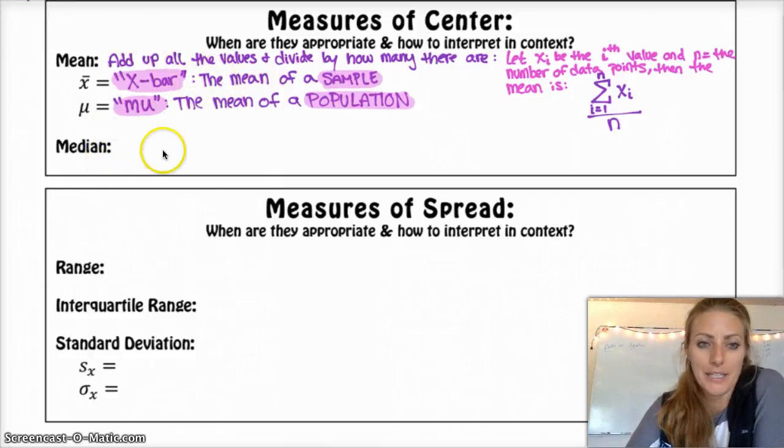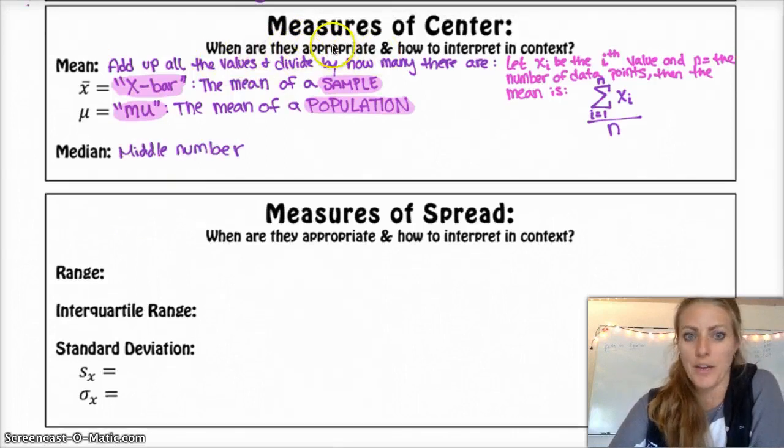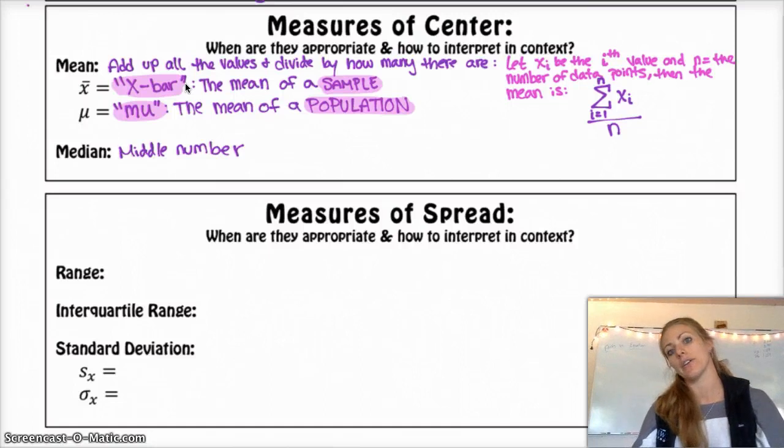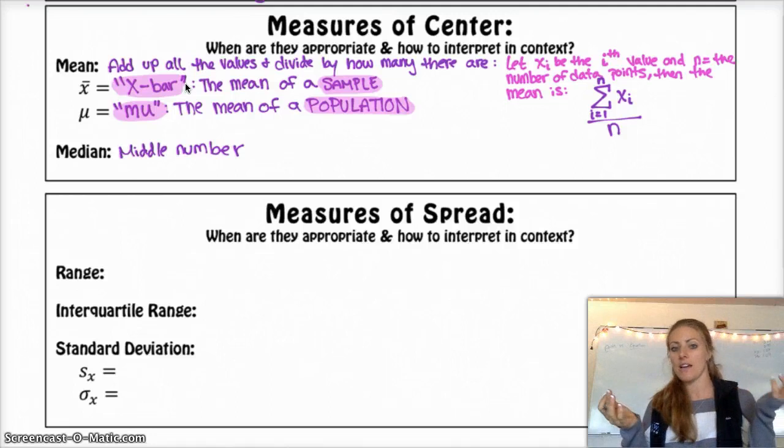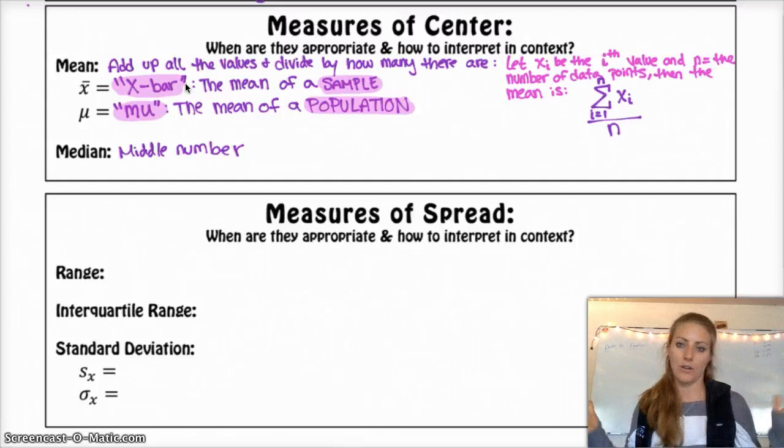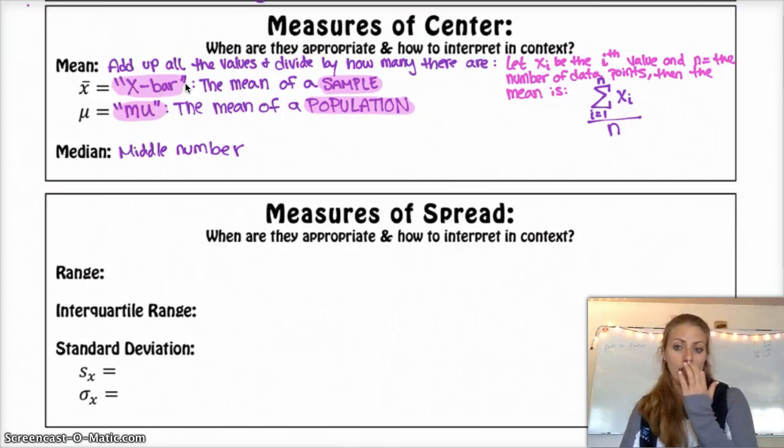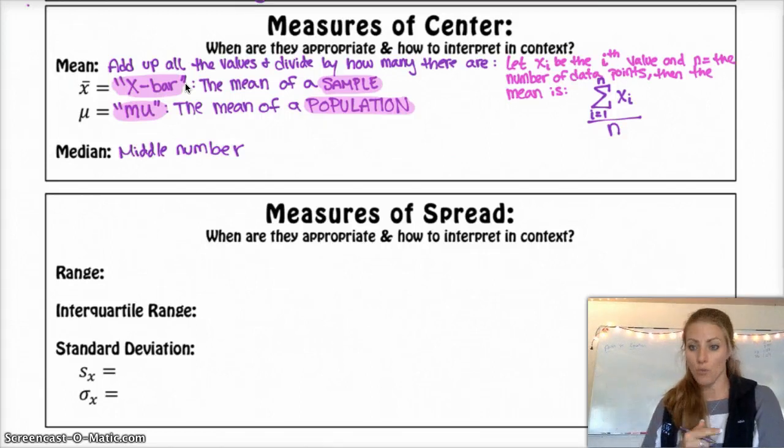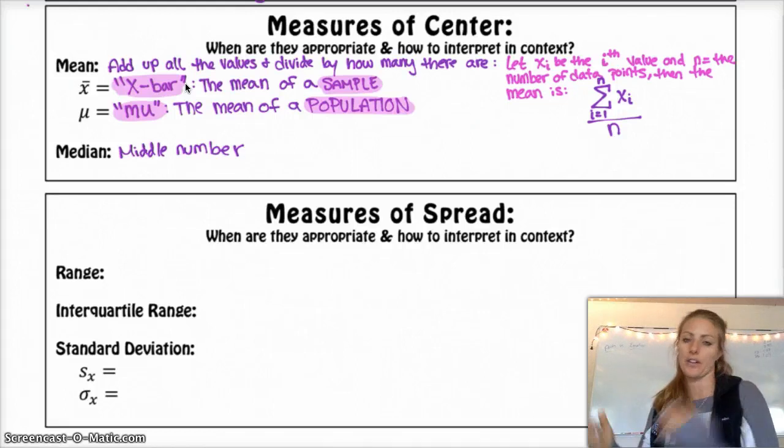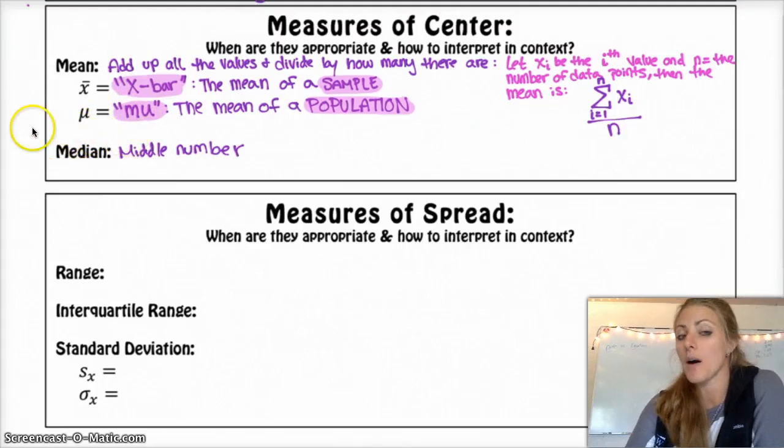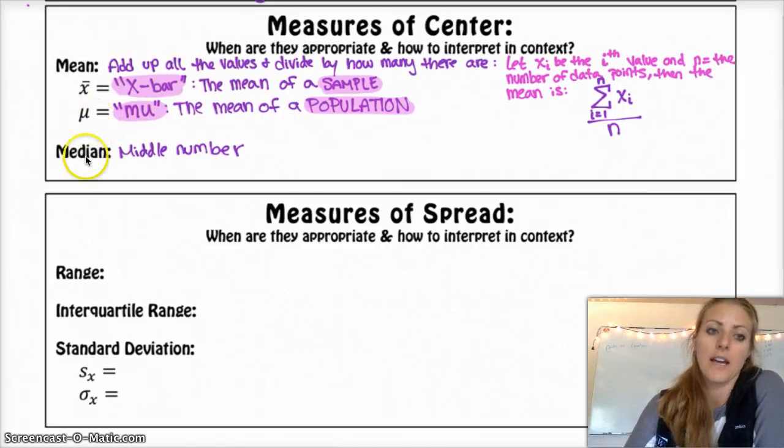I'm going to address real quick, when are they appropriate? The mean can be strongly influenced, or is strongly influenced by extreme values. If most of your data is around 80, like 79, 78, 80, 81, 82, 83, and we're doing test scores or something, and one person completely bombs the test and gets a 10%, the mean average of the test will drop tremendously because of that zero value or that 10%. The median, on the other hand, would stay right where the rest of the data is.